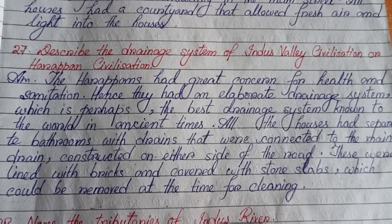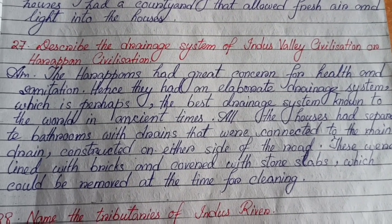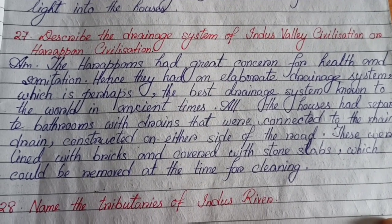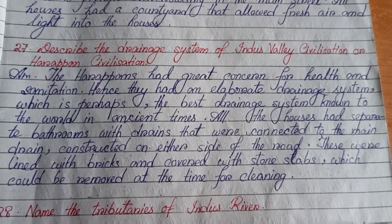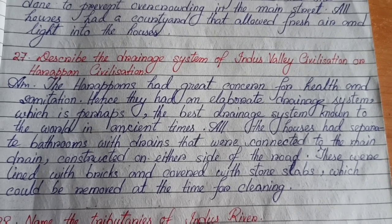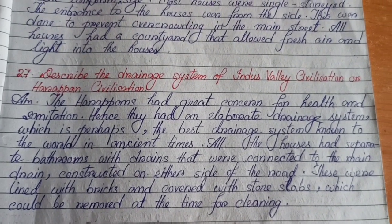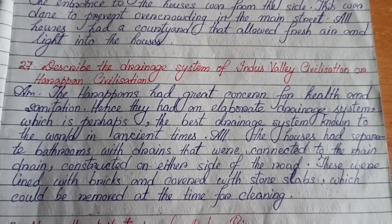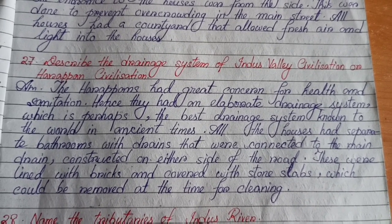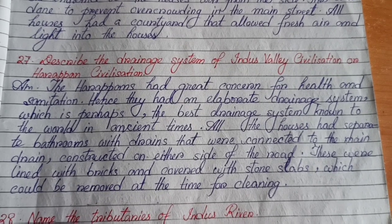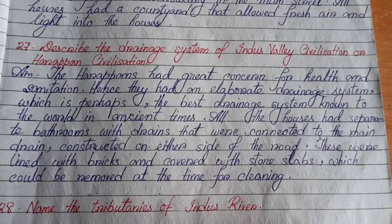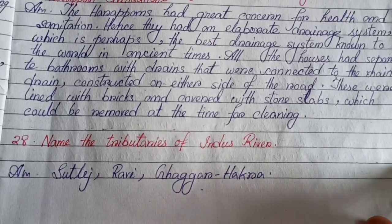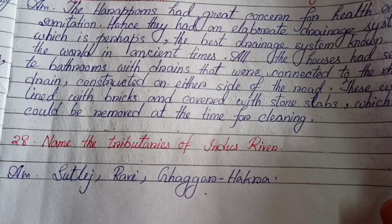Describe the drainage system of the Harappan civilization. The Harappans had great concern for health and sanitation. Hence they had an elaborate drainage system, perhaps the best known in the ancient world. All houses had separate bathrooms with drains connected to the main drain constructed on either side of the road. These were lined with bricks and covered with stone slabs, which could be removed for cleaning. The tributaries of the Indus are: Sutlej, Ravi, and Ghaggar-Hakra.